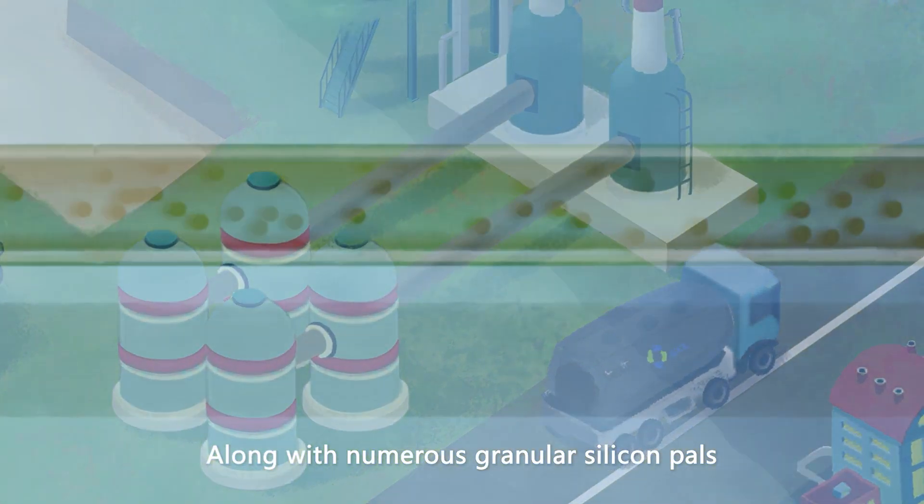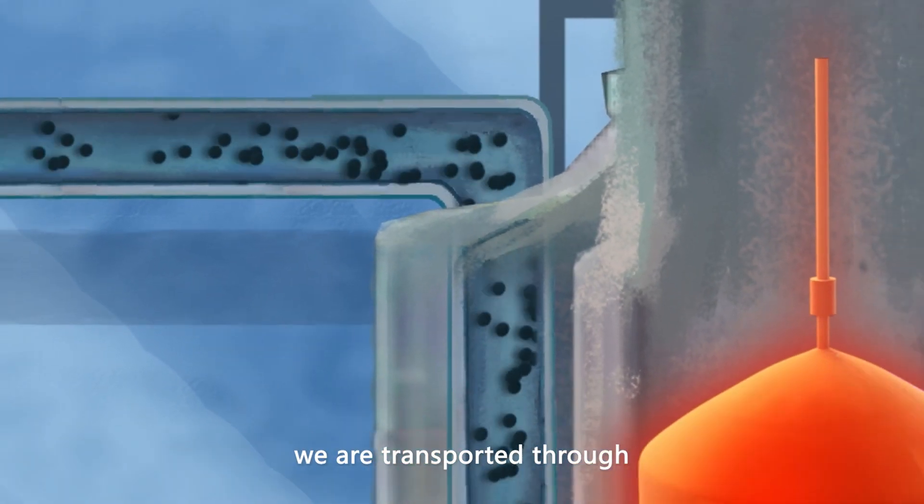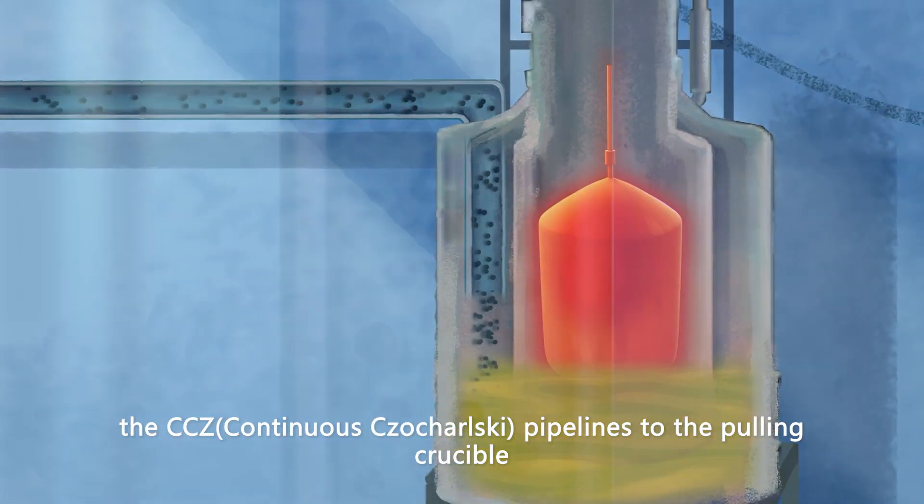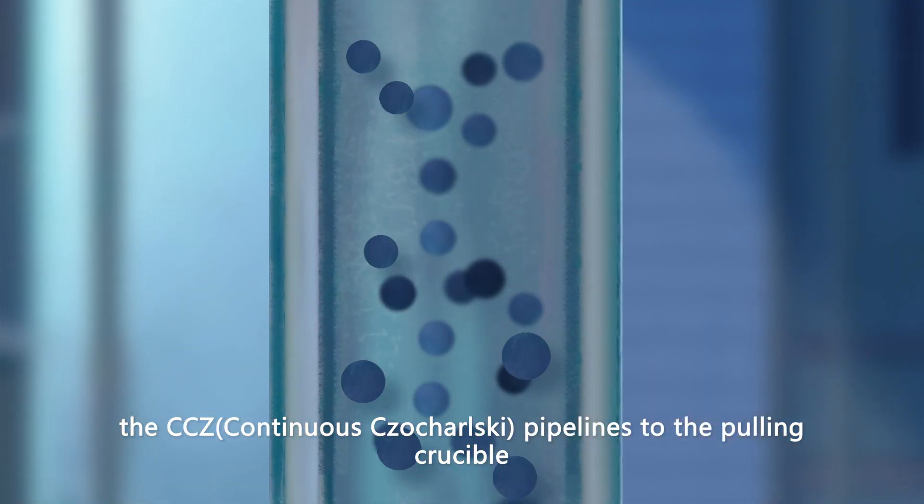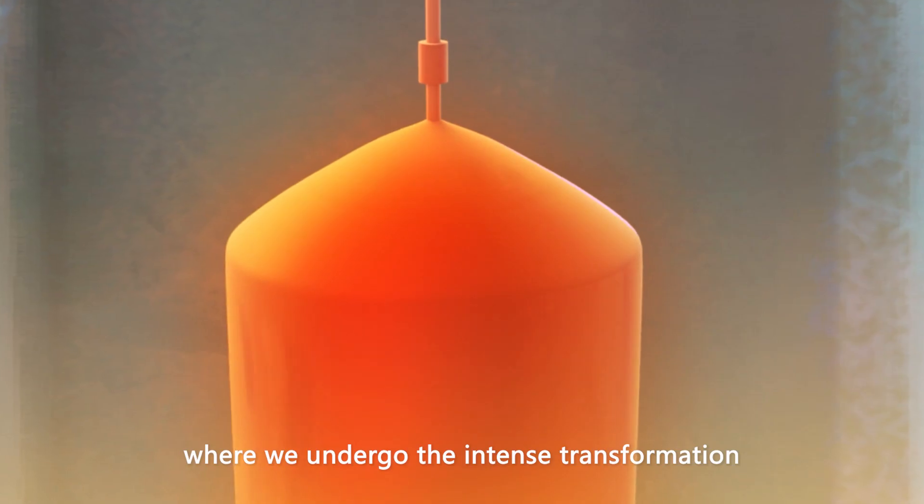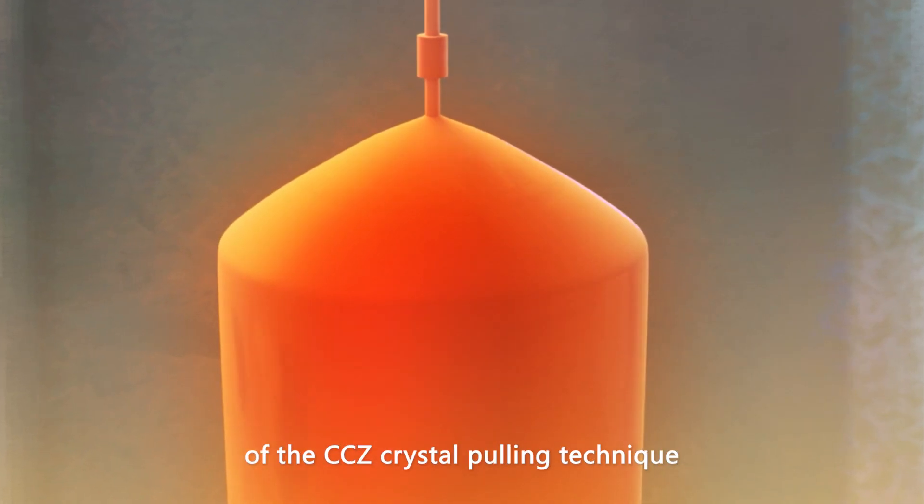Along with numerous granular silicon pelts, we are transported through the CCZ Continuous Czochralski pipelines to the pulling crucible, where we undergo the intense transformation of the CCZ crystal pulling key technique.